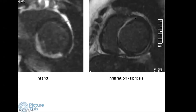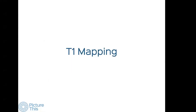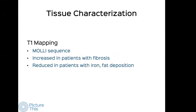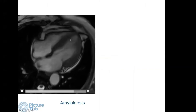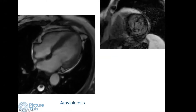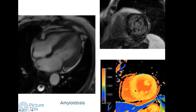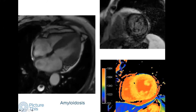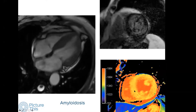On the short axis view in the anteroseptal segment you can see transmural enhancement, but as it moves into the anterior wall it becomes more epicardial or mid-myocardial. The other sequence is T1 mapping, which looks at a specific T1 property — increased in fibrosis and reduced in iron and fat deposition. Here is a patient with amyloidosis: there is myocardial thickening on the four-chamber view with relatively maintained systolic function. The LGE shows patchy abnormal subendocardial enhancement, and the T1 is greater than 1400 milliseconds — normal is 1295 in our setup — which is very characteristic of amyloidosis.